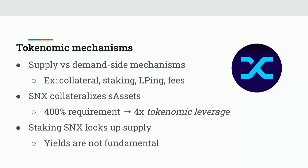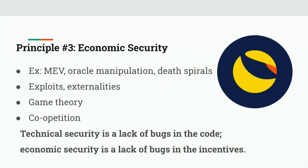Similarly, staking SNX locks up supply — that's a supply-side mechanism, not a demand-side mechanism, because the fundamental demand is not for yields. Yields you can find in many different places, but the essential utility of Synthetix and what drives its token value is the collateralization mechanism. I want to underscore that because if you make the mistake of thinking yields are the fundamental product of your protocol, your head's going to be in the wrong place, and you're going to design things that are not sustainable and lead to collapse. And the third principle deals with that — economic security.